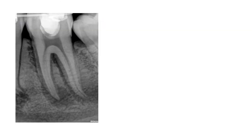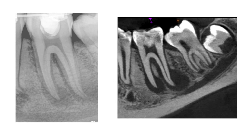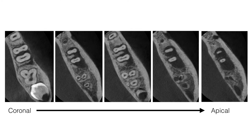A preoperative periapical radiograph revealed a large periapical area and it was decided to take a CBCT scan to determine the extent of the pathology and the prognosis of this tooth. A sagittal view of the CBCT scan demonstrated two large periapical radiolucencies around the mesial and distal roots, with the distal area extending right up into the furcation. Different slices through the axial plane further emphasized the extent of the periapical pathology.